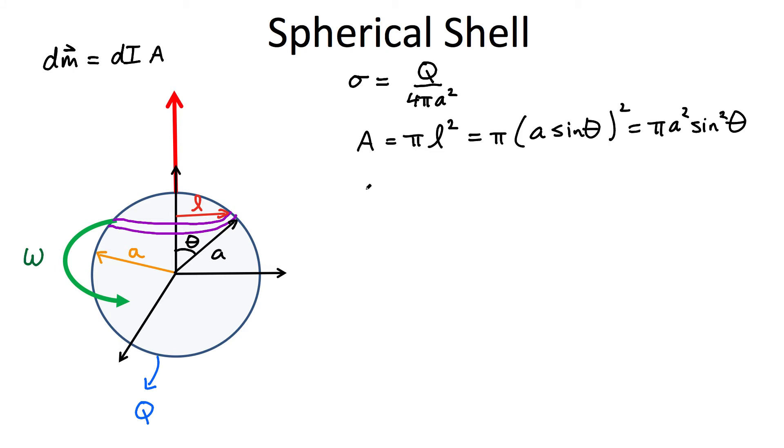Now let's go ahead and calculate the magnetic moment of that particular shell. I still need to find out what the current is. But now I can substitute the expression here for the area, which is simply pi A squared sine squared theta. So all we have left to do now is evaluate what is this small current element.